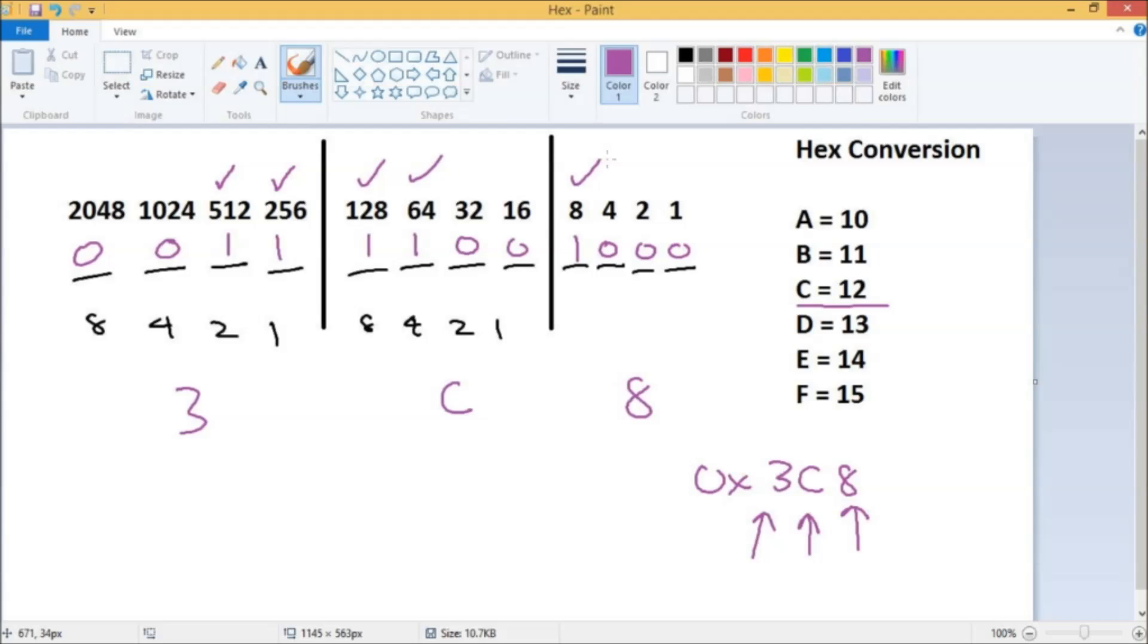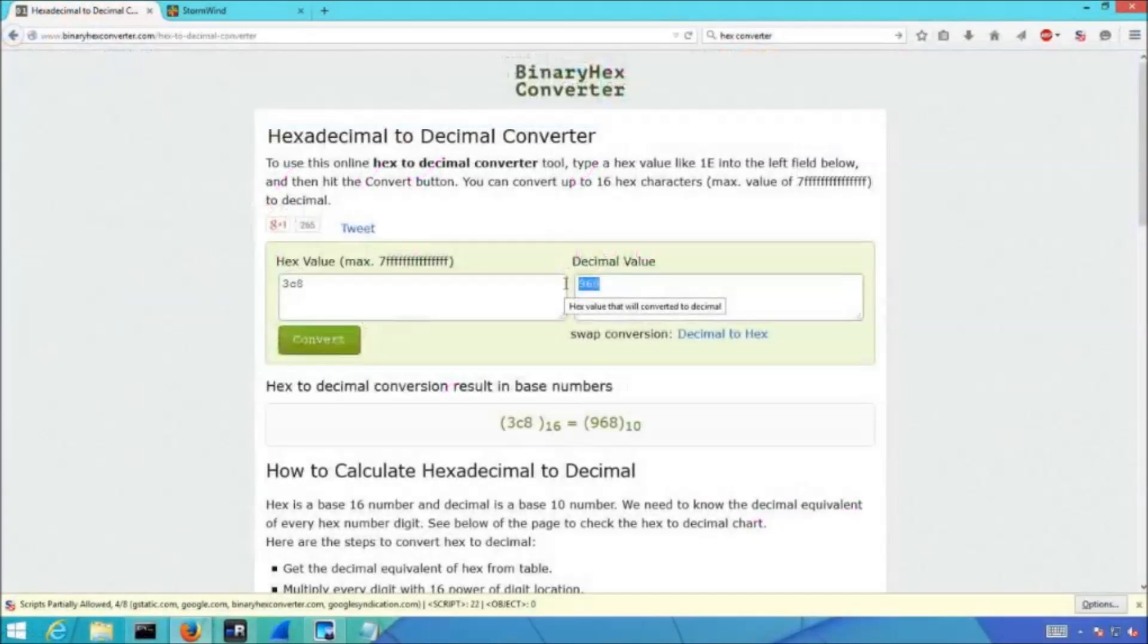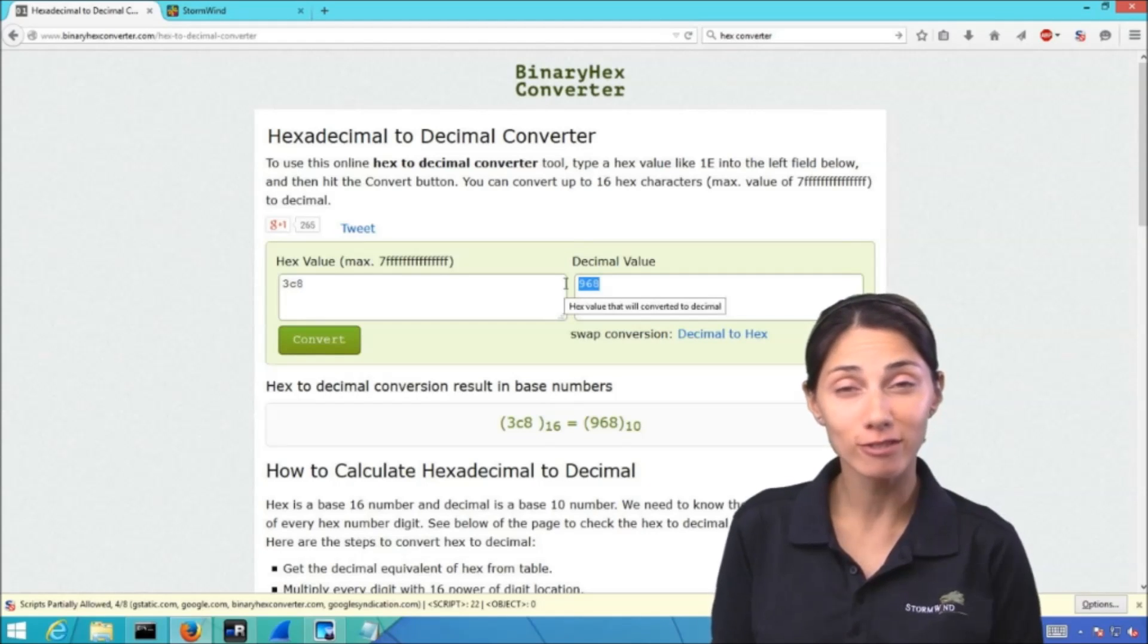And then let me allow you guys to punch those numbers into the calculator. I'll go over to my converter, 3C8, convert. All right, so when you add those up in your calculator you should get 968. So that was the value that we got.